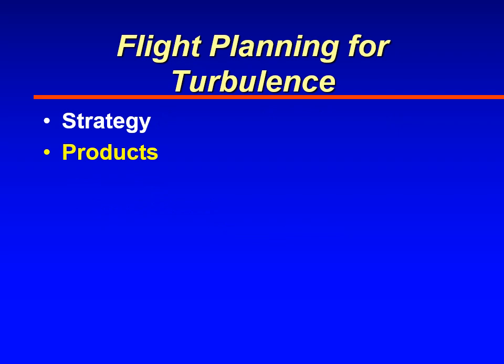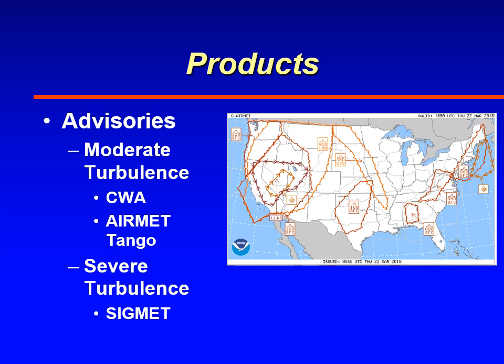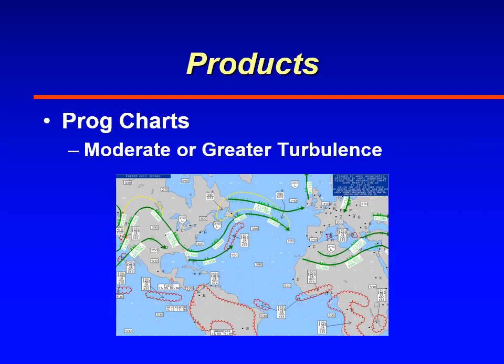With that in mind, we can look at the weather products currently available for turbulence avoidance and understand their limitations. Weather products can be generally broken down into advisories, prognostic charts, and the Graphical Turbulence Guidance product. The Aviation Weather Center and Center Weather Service Units provide advisories to alert us of areas of moderate or severe turbulence. Moderate turbulence can be found in Center Weather Advisories and the AirMet Tango, whereas severe turbulence is only forecasted in SIGMETs.